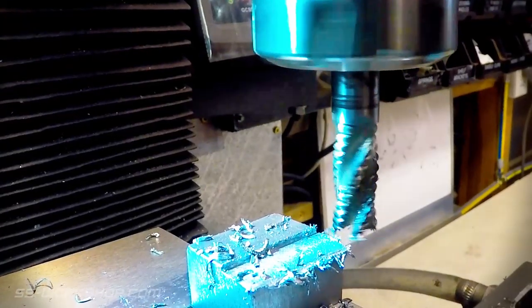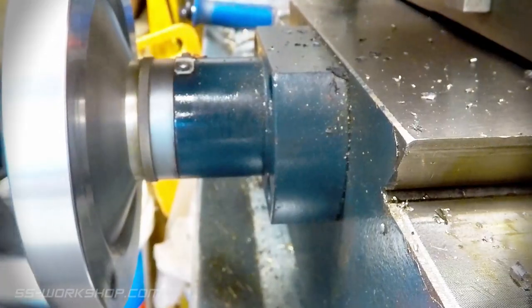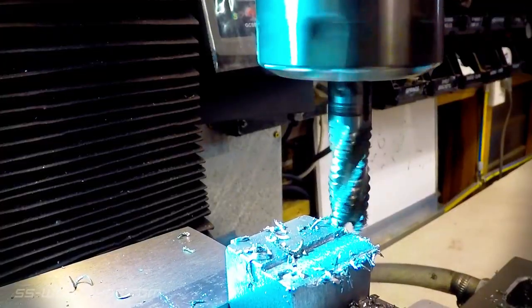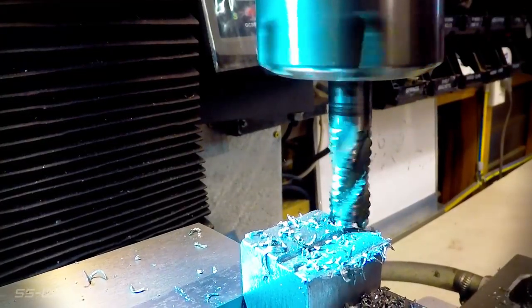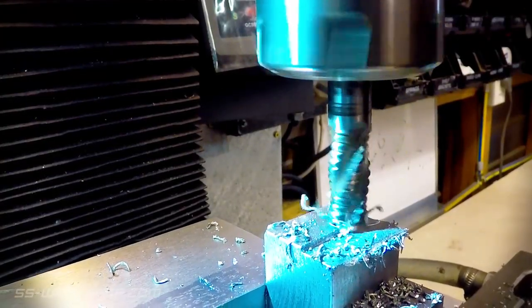Next part is a block that'll ride up and down the threaded rod, providing height adjustment. So first I machine it down to size with a 12mm roughing mill.